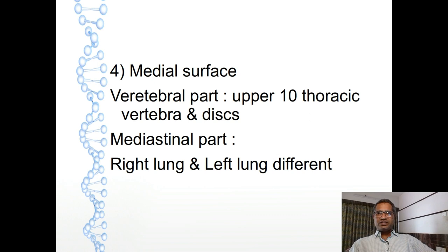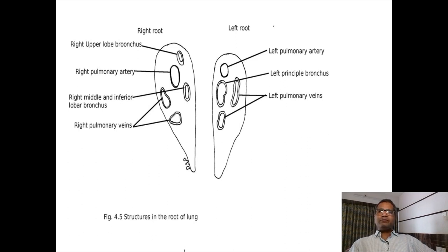In right lung, the hilum is a triangular part in which some structures enter inside the lung and some come out. Inside the hilum of right lung, from above downward: upper lobe bronchus, pulmonary artery, right principal bronchus, then lower pulmonary vein - meaning bronchus, artery, bronchus, vein. These four structures are present in the hilum of right lung. Anterior to posterior, same structures are: vein, artery, and bronchus.